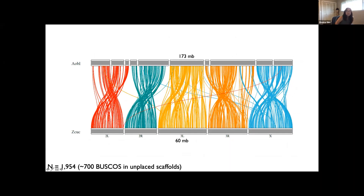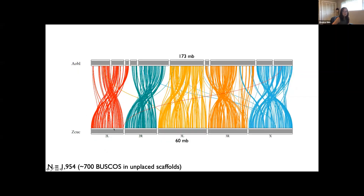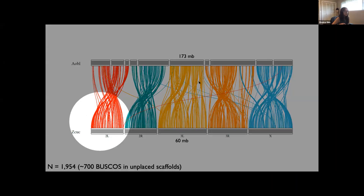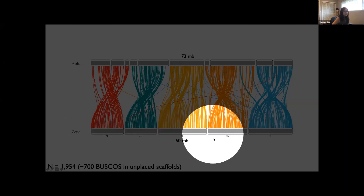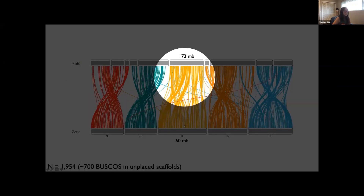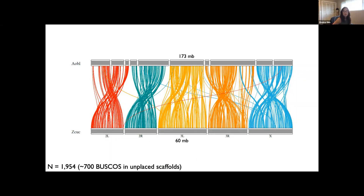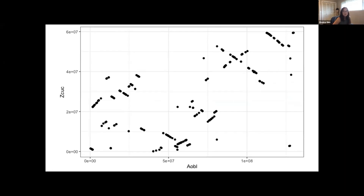When you start to compare Tephritids with each other, you start to see a lot more colinearity. However, those five bars representing the melon fly don't actually represent contigs, unlike the 10 bars from obliqua — they represent tens of thousands of contigs assembled in this chromosomal context. The scatter plot for obliqua versus melon fly shows that there are actually a lot more regions of collinear genes.